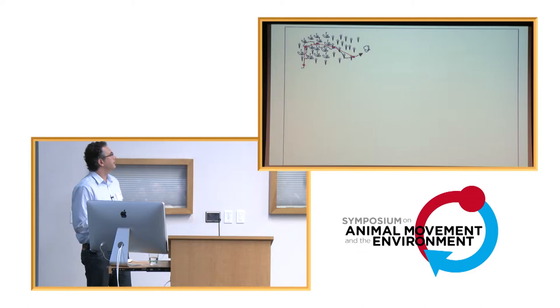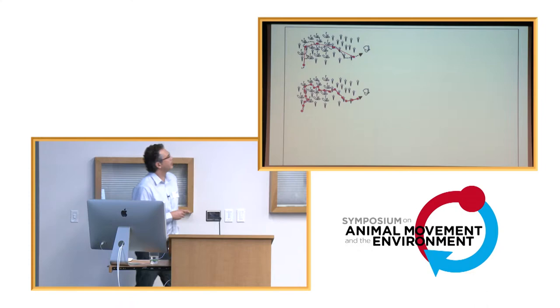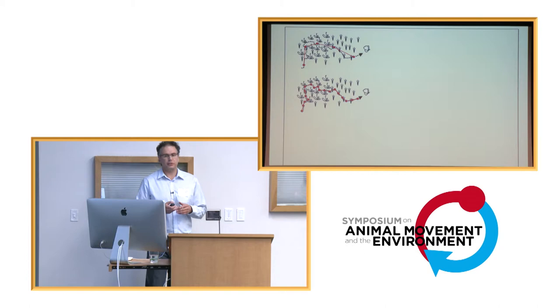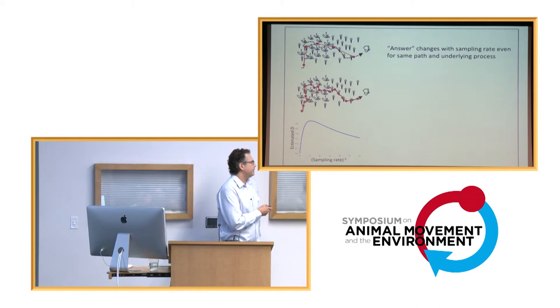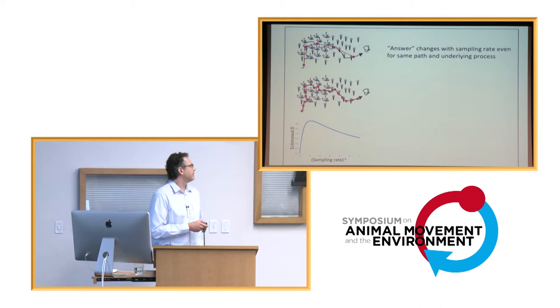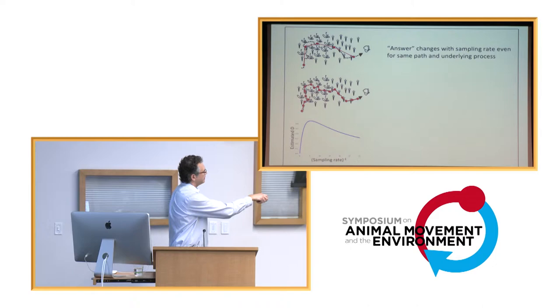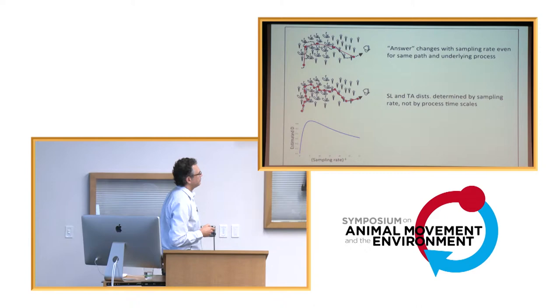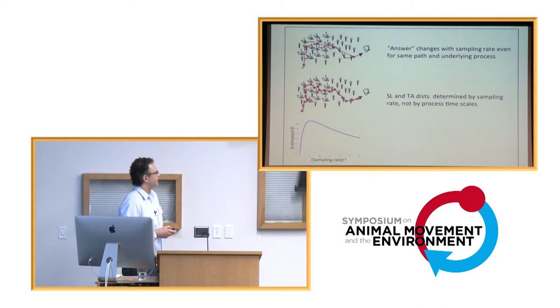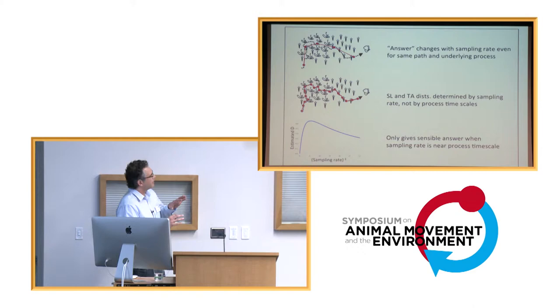Paul talked a lot about the sampling rate dependence of these kind of discrete step models. So if you sample this way or if you sample that way, same underlying path, and you calculate things like a diffusion rate or step length and turn angle distributions, you get essentially different answers. If you want to summarize the movement rate of your critter in a standardized way, you might calculate the diffusion coefficient. And you can see that the same underlying path, the answer you get is going to depend very heavily on the sampling rate, the way that you sampled the process. That's obviously not very ideal behavior.